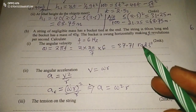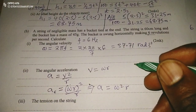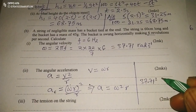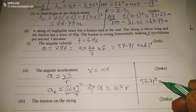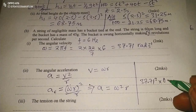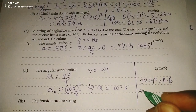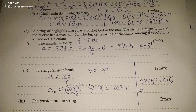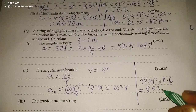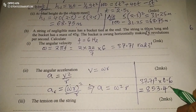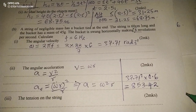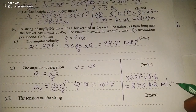With omega already calculated, we take omega squared multiplied by r. The radius r is 60 centimeters, which is 0.6 meters. So acceleration equals 37.71 squared times 0.6, giving us 853.42 meters per second squared.